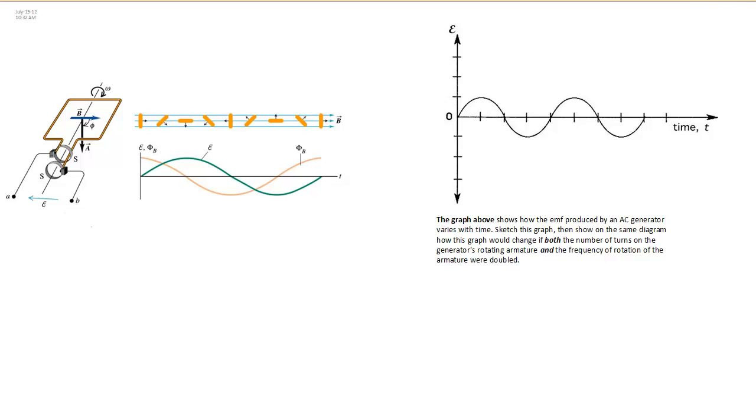Well, let's look at our equation. We see in our formula that the induced EMF depends directly on the number of turns. So, if I double the number of turns, the maximum induced EMF should also double. So, it should reach a higher peak. So, that takes care of the first part.